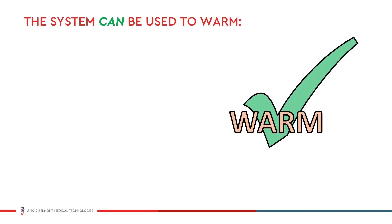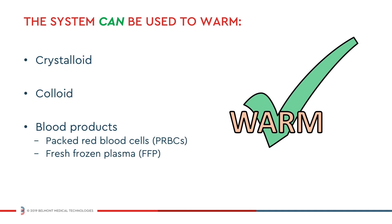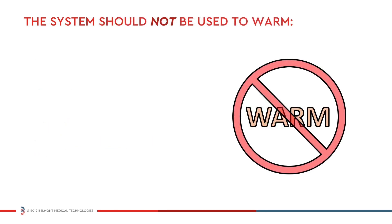The Buddy Light can be used to warm crystalloids, colloid, and anticoagulated blood products, including packed red blood cells and fresh frozen plasma. The system should not be used to warm platelets, cryoprecipitate, or granulocyte suspensions.